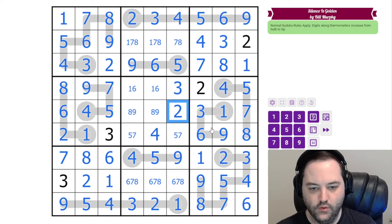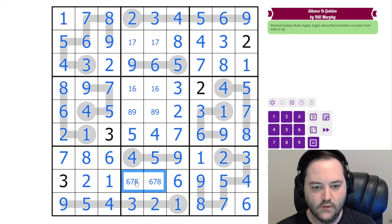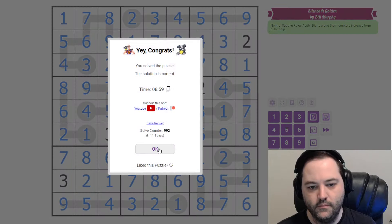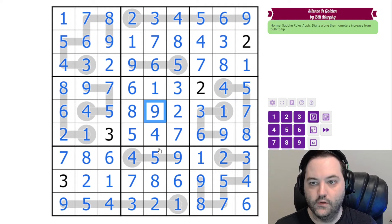And we should be able to finish off here. This is not two. So this is our only place for two. The five here gives us seven, five. That gives us eight here. The last digit in the column is a six. And then six here gives us one and six, one and seven, seven and eight, eight and nine. And that is how you solve Silence is Golden.